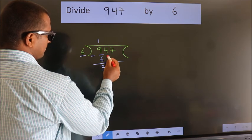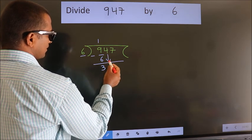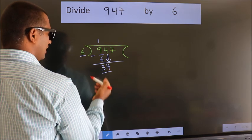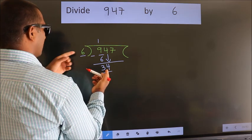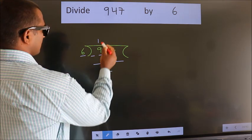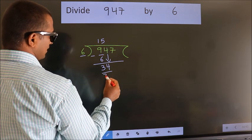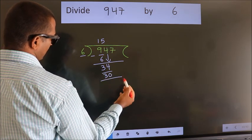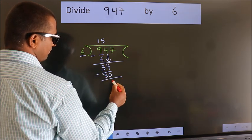After this, bring down the beside number. So 4 down. So 34. A number close to 34 in the 6 table is 6 times 5 is 30. Now we subtract. We get 4.